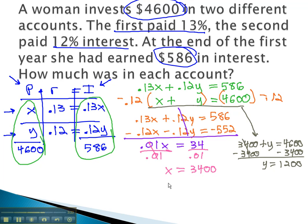This means $3,400 was invested in the first account, x, which was at 13%. We have $3,400 at the 13%, and the other amount, $1,200, is our y, which was at 12%.